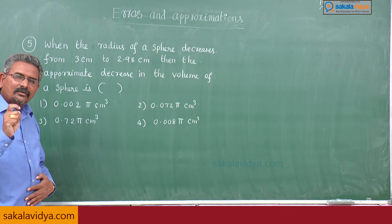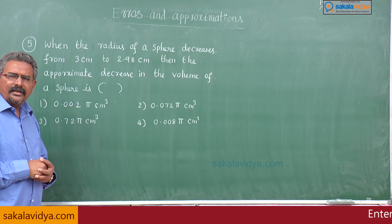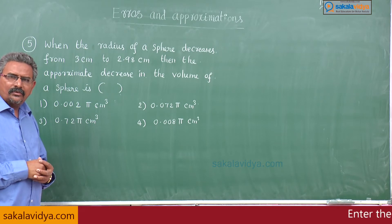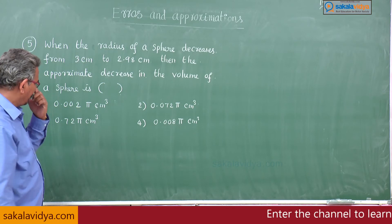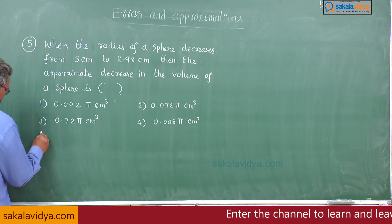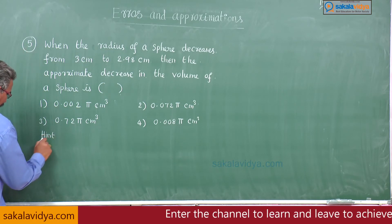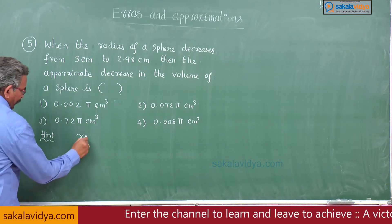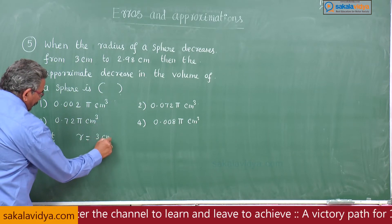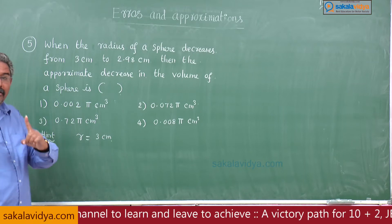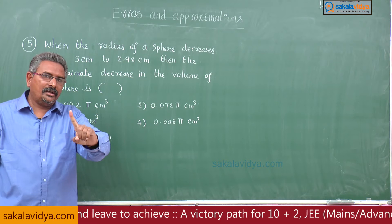Delta v equals — generally the formula is: df equals f dash x into delta x — that formula we have to apply here. Let us say initial radius r is equal to 3 centimeters. All calculations are done based on initial values only.